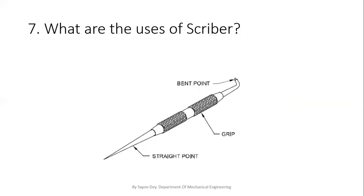The next question is: what are the uses of a scriber? This is a very important question. If we want to scribe on wood, we can use pencils. But when we are working on metals — for example, in our fitting shop — we cannot use pencils, so we have to use scribers to scribe on the metals. This is the main application of the scriber, and we use it in our fitting shop. Various parts of the scriber are shown in the picture.